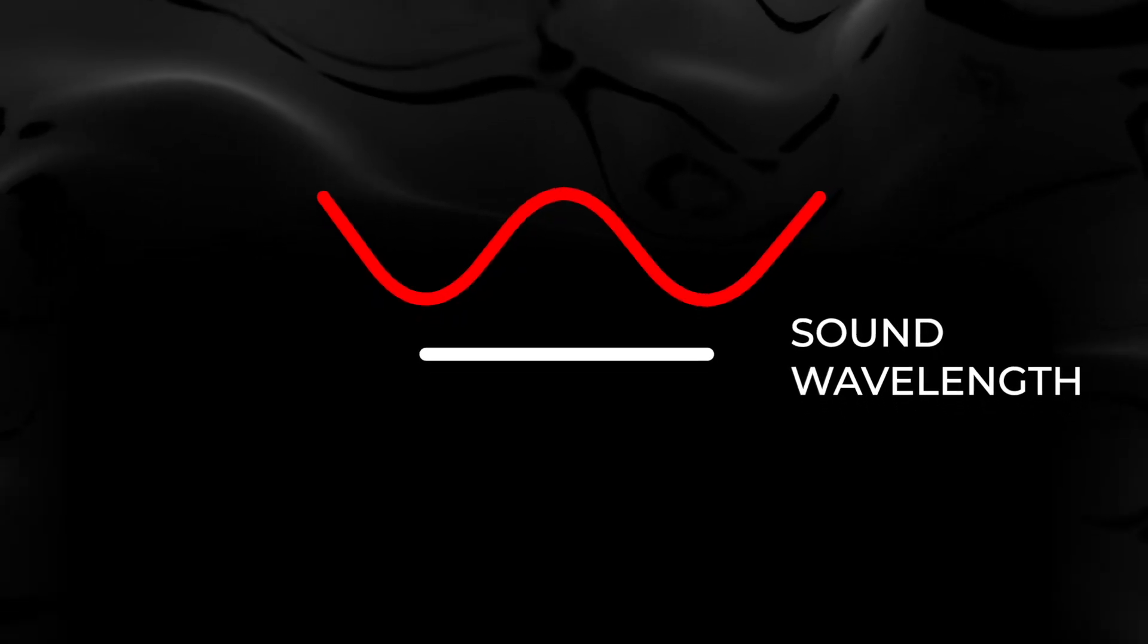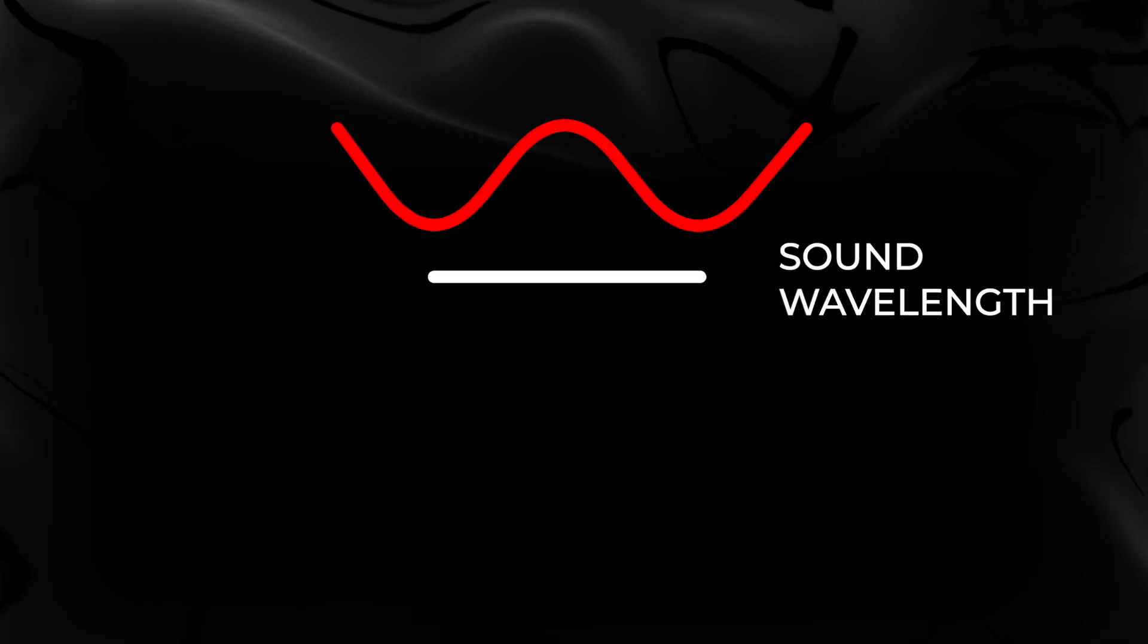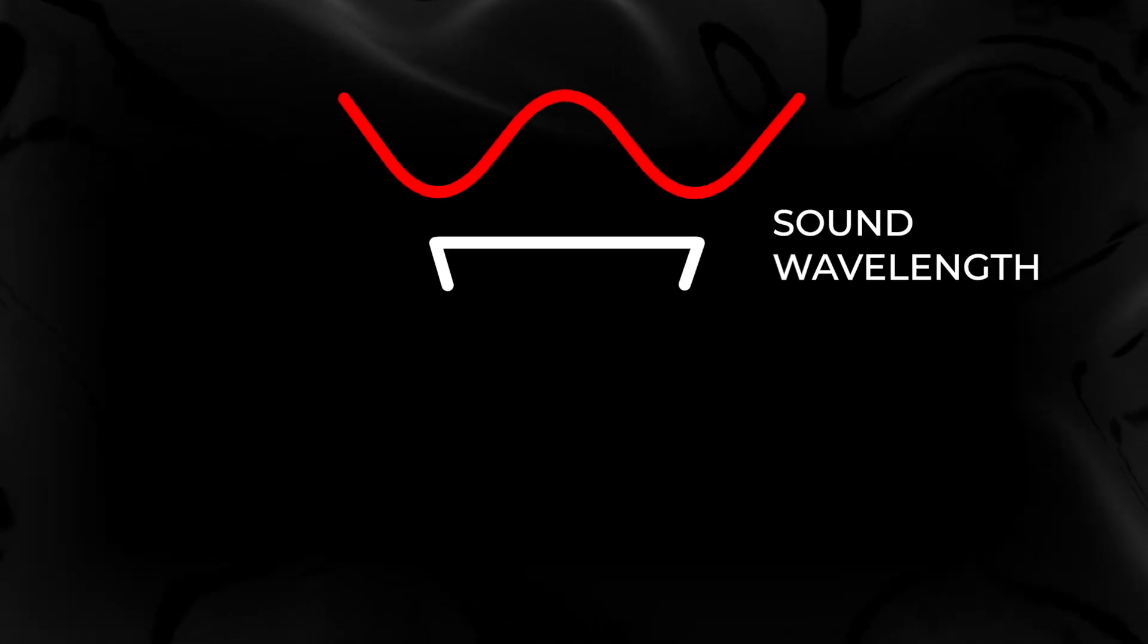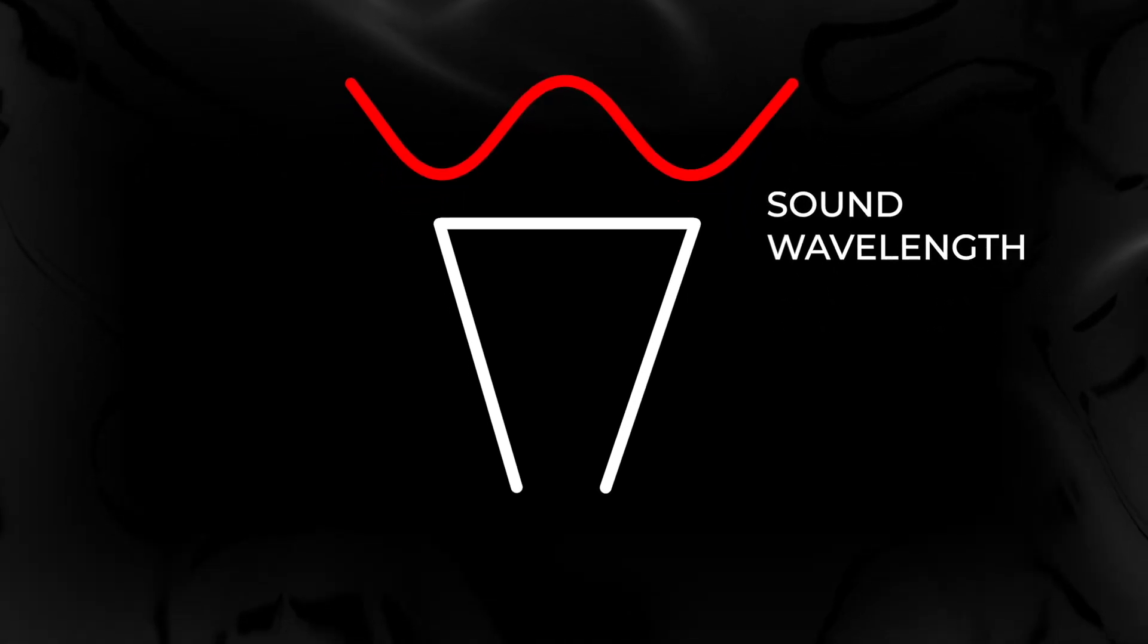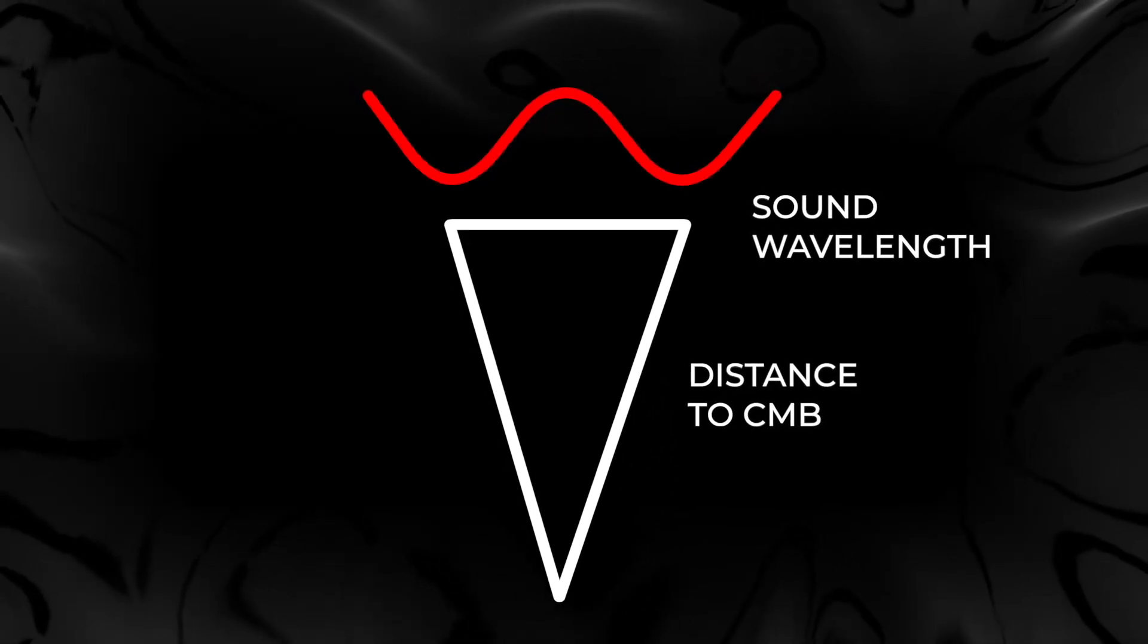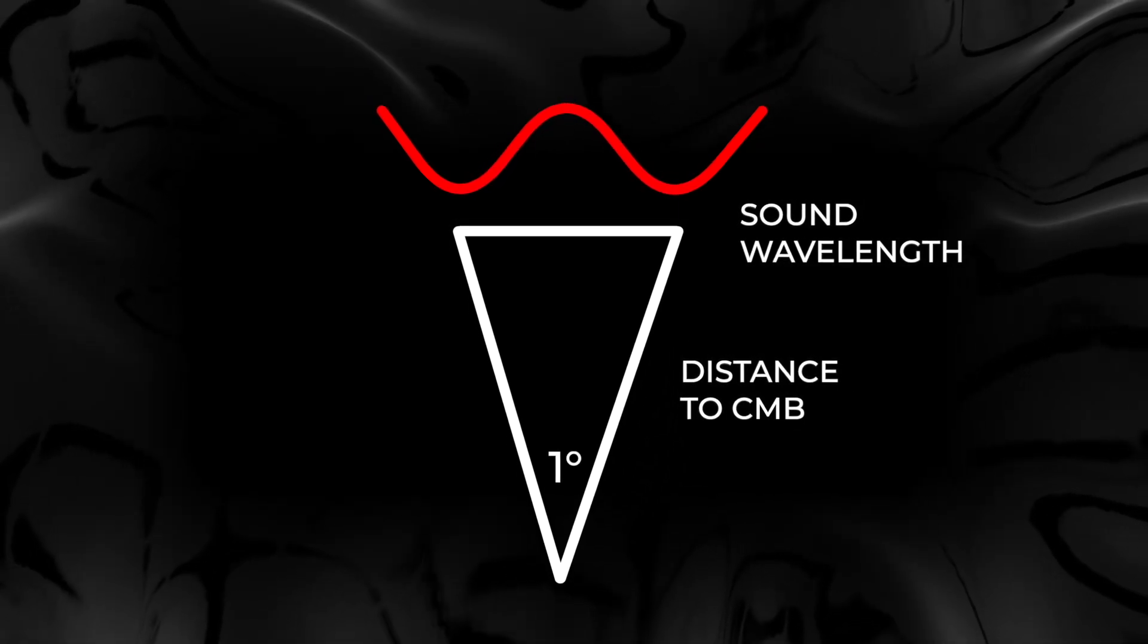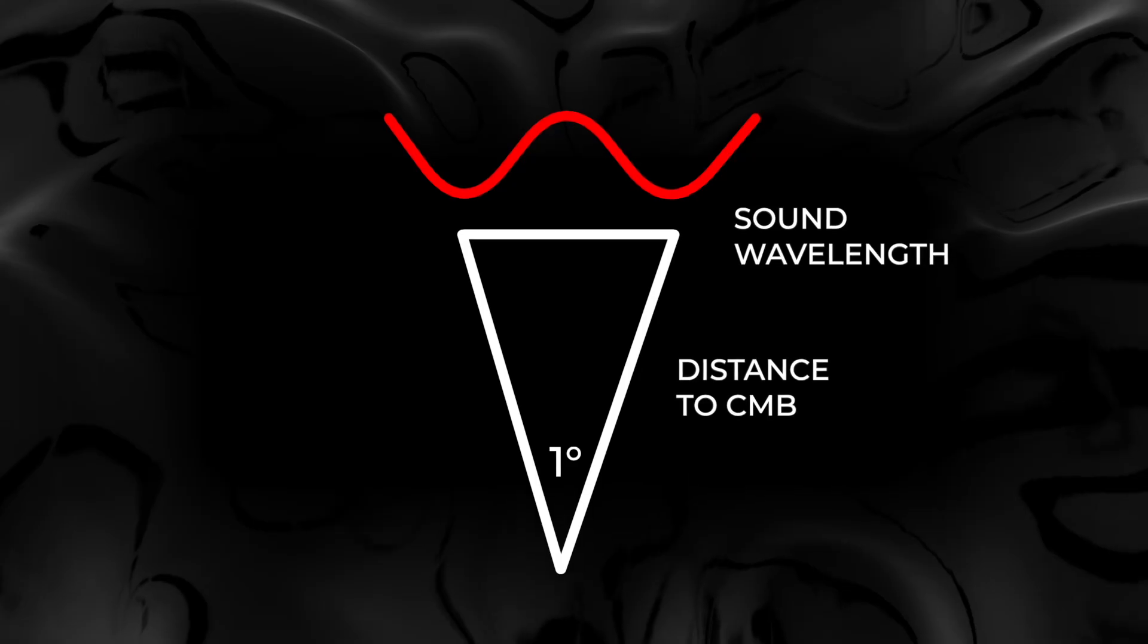Now it turns out to not be super hard to calculate the most common wavelengths that could develop in the Big Bang's hot plasma before the CMB became visible. Furthermore, we know how far away the sphere that holds the CMB is in the present day. Those two distances set up a triangle and astronomers can calculate what should be the most common angle between adjacent hot spots. It turns out to be about one degree.